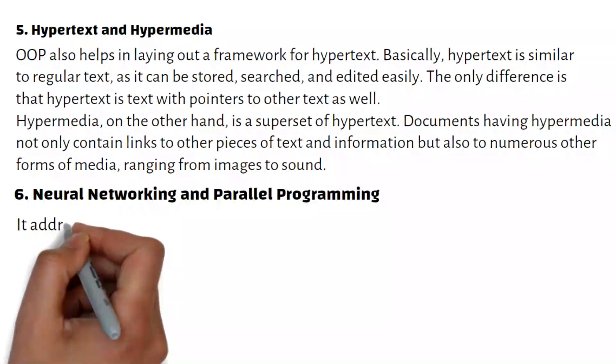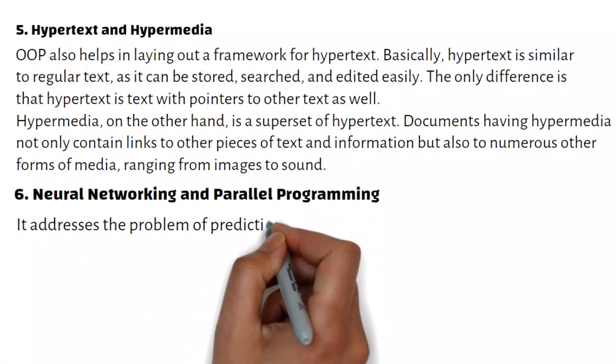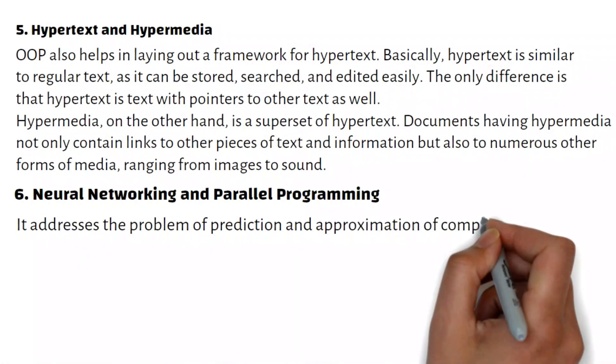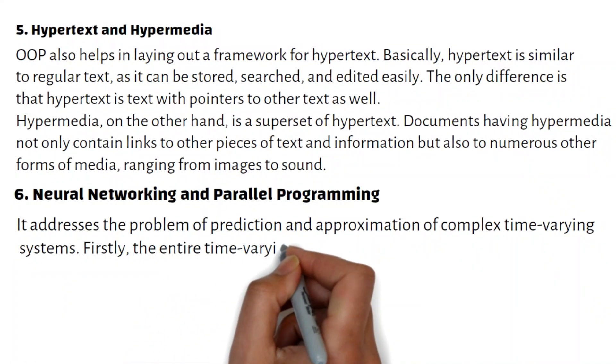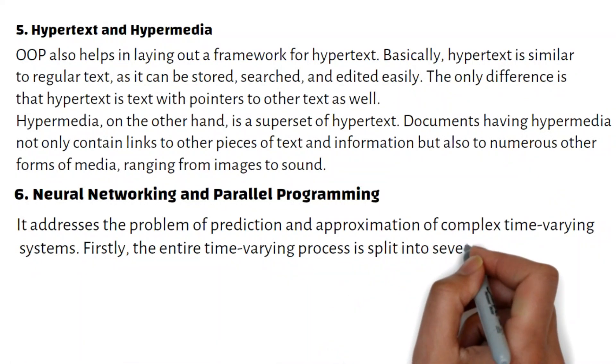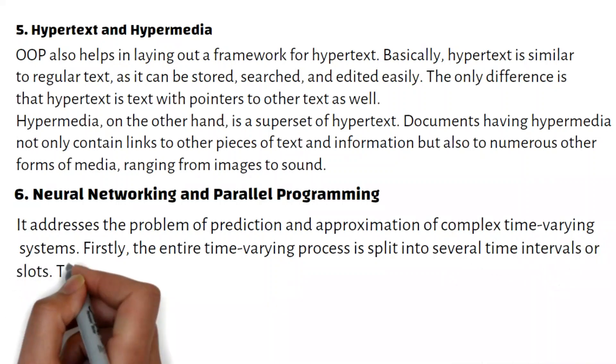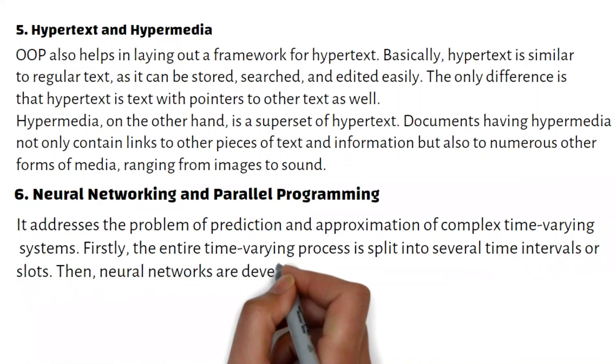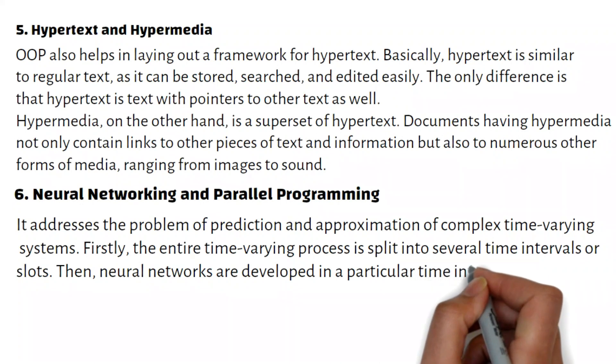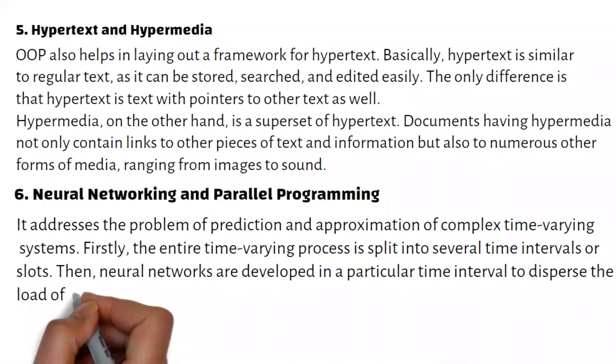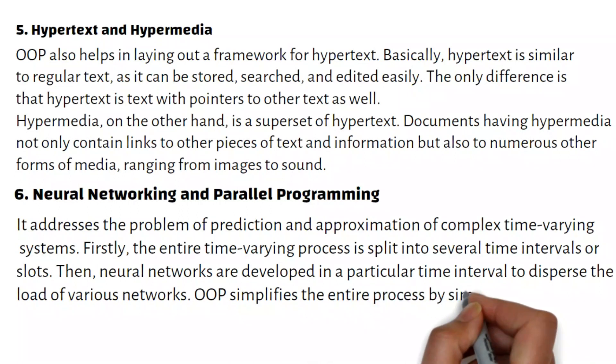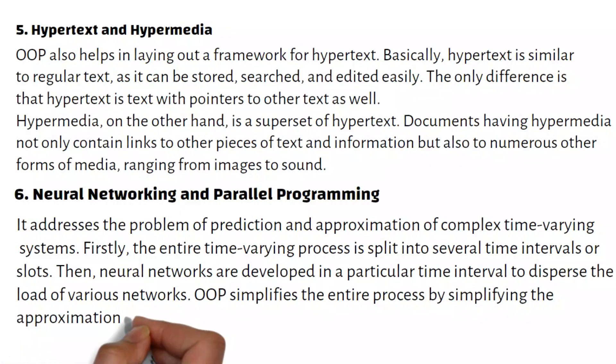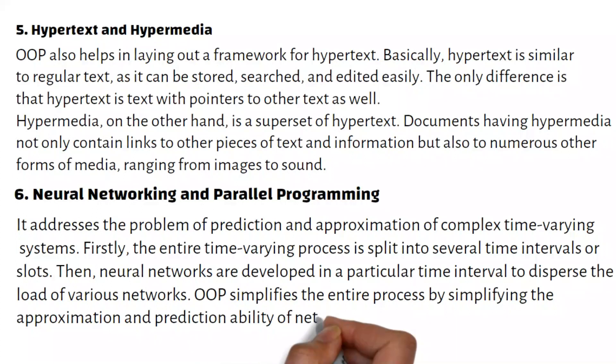Neural Networking and Parallel Programming addresses the problem of prediction and approximation of complex time-varying systems. Firstly, the entire time-varying process is split into several time intervals or slots. Then, neural networks are developed in a particular time interval to disperse the load of various networks. OOP simplifies the entire process by simplifying the approximation and prediction ability of networks.